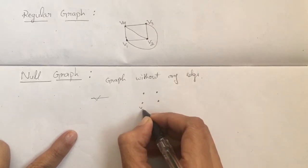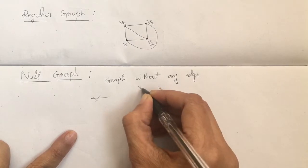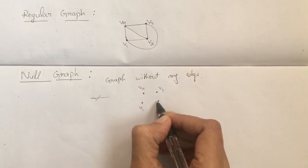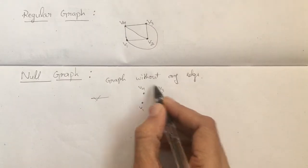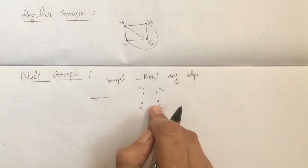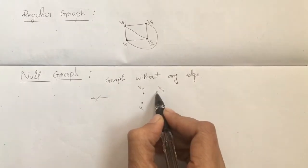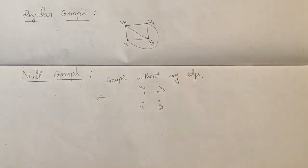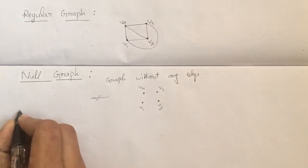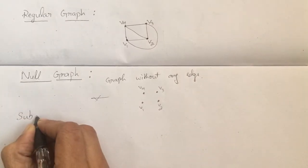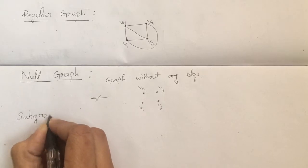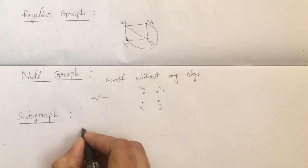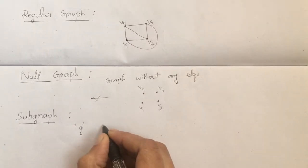This is my graph with vertices v1, v2, v3. This is a disconnected graph in which each vertex is an isolated vertex, meaning there is no edge incident on any vertex. All the vertices are isolated vertices, and such a graph — a graph without any edge — is called a null graph.